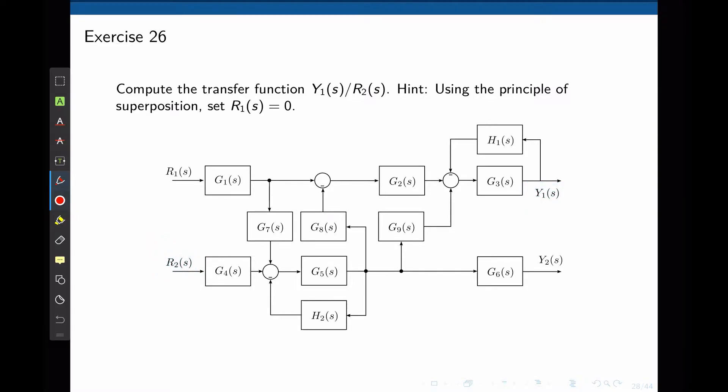We notice here that there are two inputs and two outputs, which means that both inputs are affecting the output of the system. But because the system is linear, we can calculate the influence separately.